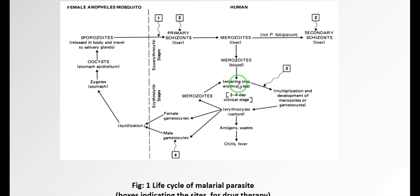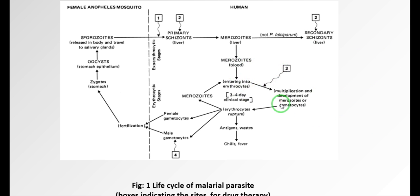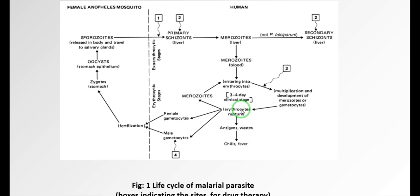When the merozoites enter the erythrocytes, they start the reproduction cycle. Before starting the reproduction cycle, they reside in the erythrocytes for about 3-4 days. After starting the reproduction cycle, they make further erythrocytes and the adjacent erythrocytes become infected. Then they convert into gametocytes. Upon rupturing the erythrocytes, the debris released is one of the major causes of severe fever and chills.